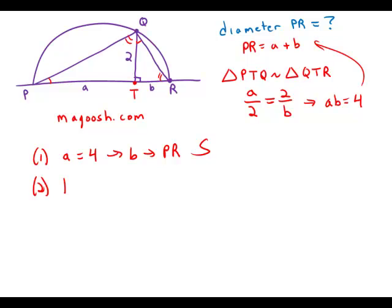Statement number 2: b equals 1. Well, we know the value of b. We can find the value of a. We can find the diameter. We're done. This is also sufficient.